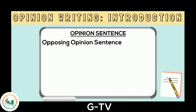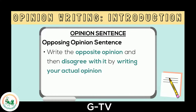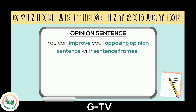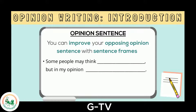Another type of opinion sentence is opposing. To write an opposing opinion sentence, you will write the opposite opinion and then disagree with it by writing your actual opinion. You can improve the opposing opinion sentence with a sentence frame like: "Some people may think..." then write the opposing opinion, "but in my opinion..." then write your actual opinion.